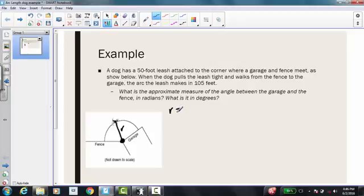So writing our given information, we have a radius equals 50 feet. And then it says, when the dog pulls the leash tight and walks from the fence to the garage, the arc the leash makes is 105 feet. So from the fence to the garage, this arc is 105 feet. So my arc length represented by s is 105 feet.